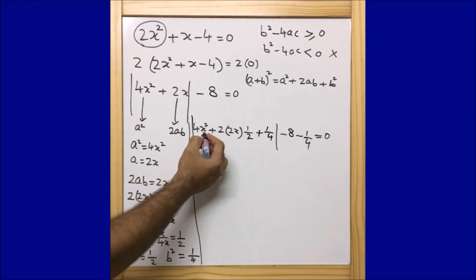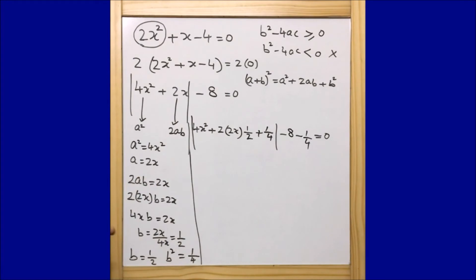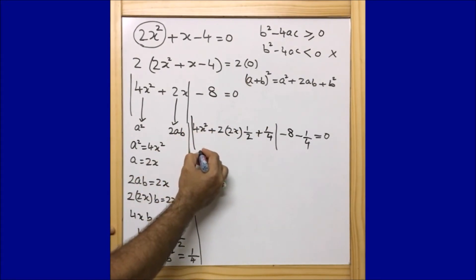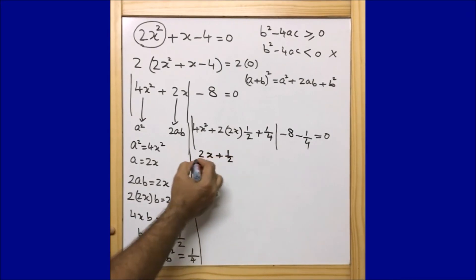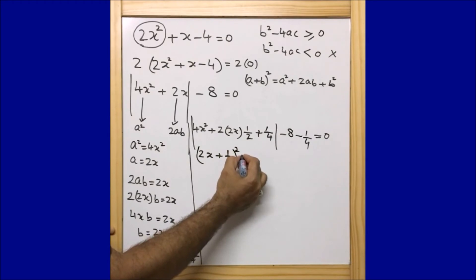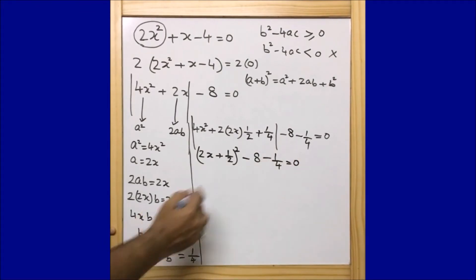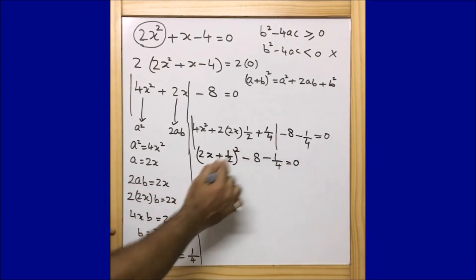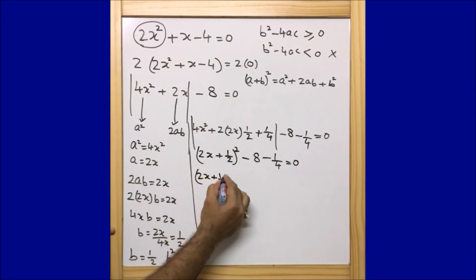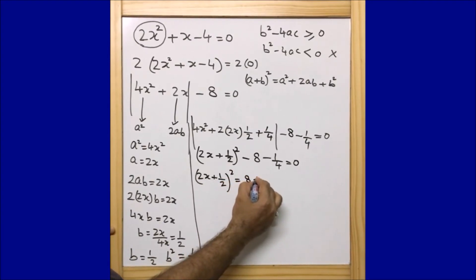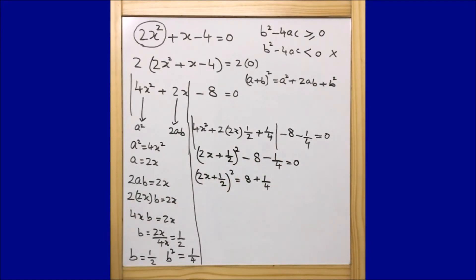We now have a² + 2ab + b² in the form (2x + 1/2)². So the equation becomes (2x + 1/2)² - 8 - 1/4 = 0. Moving the constants to the right side: (2x + 1/2)² = 8 + 1/4, because -8 and -1/4 move to the right side as +8 and +1/4.